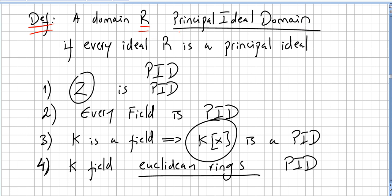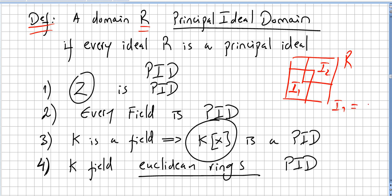We say that R is a principal ideal domain if every ideal in R is a principal ideal. So if we have a ring R with two ideals — ideal 1 and ideal 2 — and ideal 1 is generated by element A and ideal 2 is generated by element B, then both will be principal. We call this ring a principal ideal domain because every ideal is generated by a single element.